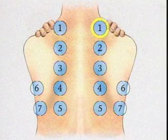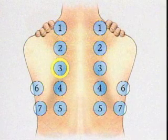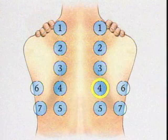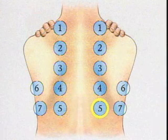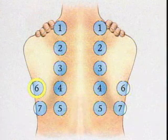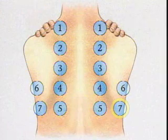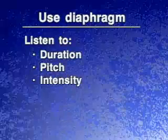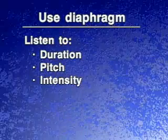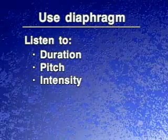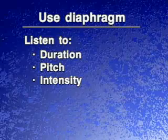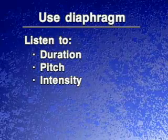To auscultate the posterior thorax, begin at the apices and proceed downward, moving systematically from side to side and comparing the sounds in symmetrical areas. Using the diaphragm of the stethoscope, listen to at least one entire breathing cycle at each location.